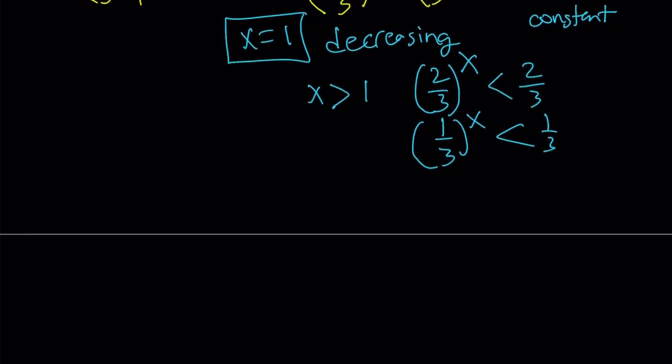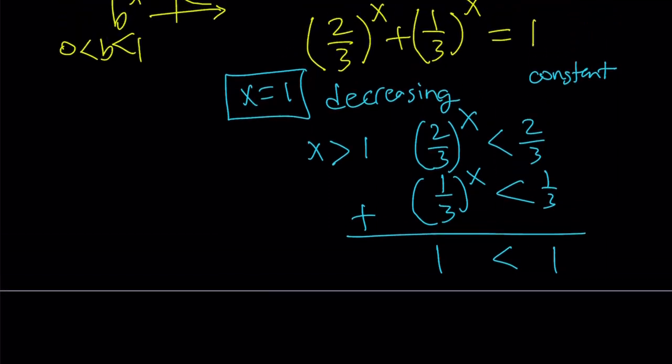And 1 third to the power of x is going to be less than 1 third. And this sum here, which is supposed to be 1, is going to be less than 1. 1 is less than 1. This is nonsense. And for x is less than 1, we get something similar, right? So, don't worry about it. We don't get any other solutions from here.